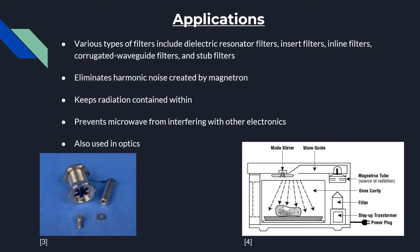There are various applications of waveguide filters, but today we will be focusing on common applications. One such application: waveguide filters are used in microwave ovens to eliminate harmful noise created by the magnetron and to shield the outside environment from microwave radiation. Additionally, the magnetron produces frequencies which impact performance in nearby electronics, so various measures are taken when designing a microwave oven.